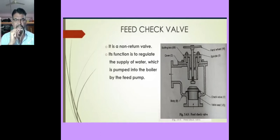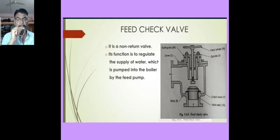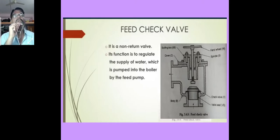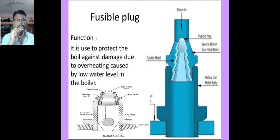The feed check valve consists of a hand wheel, spindle, feed valve, and non-return valve. When feed water enters, the non-return valve prevents the water from returning. The exact function of the feed check valve is to regulate the supply of water pumped into the boiler by the feed pump and to prevent the escaping of water from the boiler when the pump pressure is less or the pump is stopped. It is essentially a non-return valve.